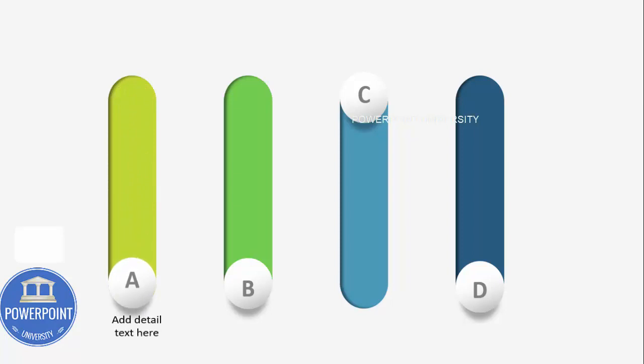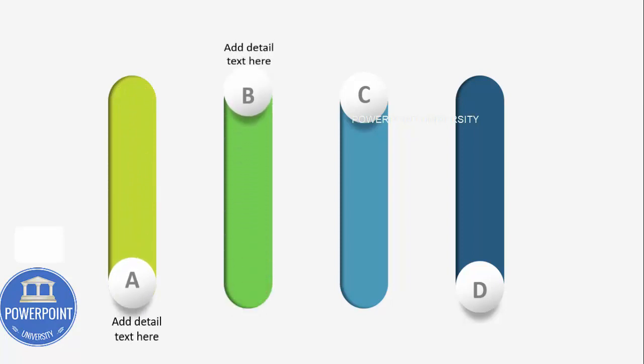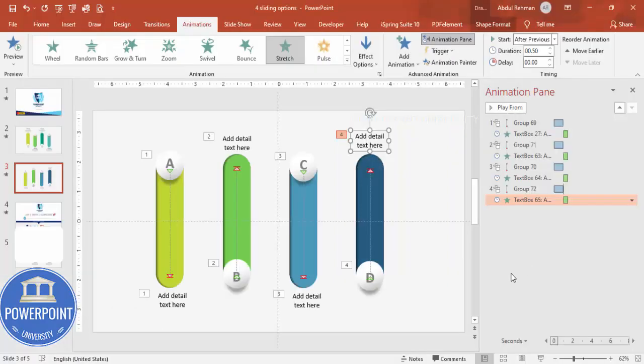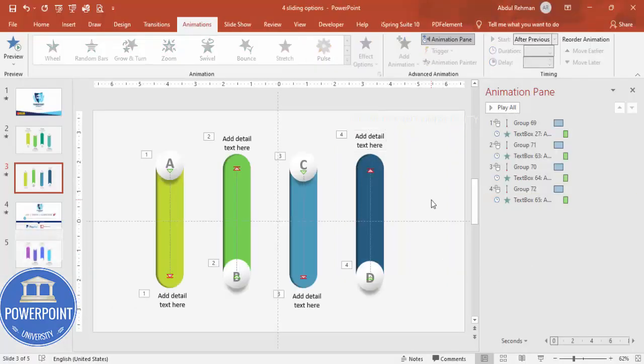Now you can see the text comes — C and D. Simple, isn't it?